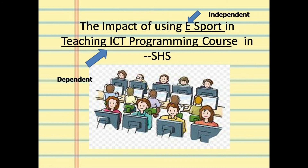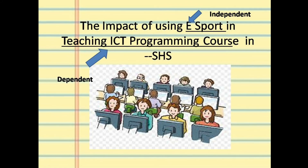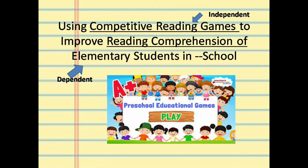Here is a sample research title — though it can still be critiqued or improved: 'The Impact of Using eSport in Teaching ICT Programming Course in Senior High School.' What affects the ICT course? The use of eSport. So the independent variable is eSport, and the dependent variable is the programming course — what will be the outcome if eSport is used in teaching? Another title: 'Using Comparative Reading Games to Improve Reading Comprehension of Elementary Students.' The independent variable is the reading games, and the dependent variable is the reading comprehension of the students.